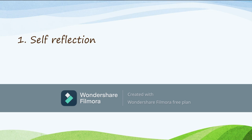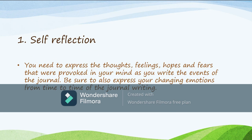Our first feature is self-reflection. You need to express the thoughts, your feelings, your hopes, and your fears that were provoked in your mind when you write the events of the journal. Be sure to express your changing emotions throughout the journal writing. That is why I started by saying that when you write a journal, you let your audience into your thoughts, feelings, hopes, and fears — and that is what makes a journal very emotional.